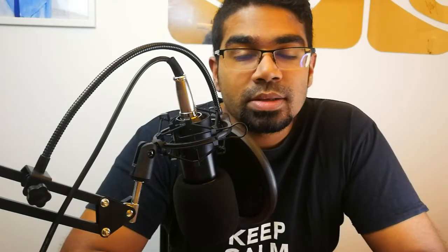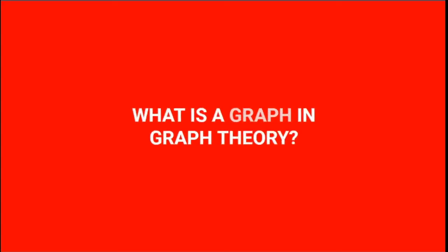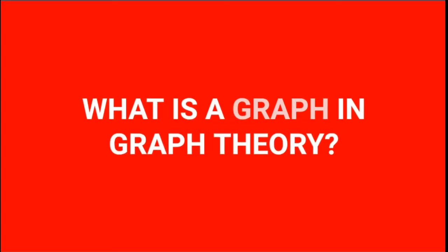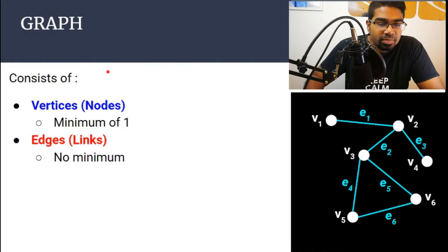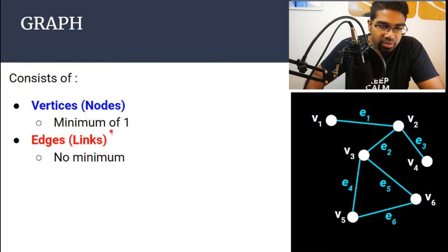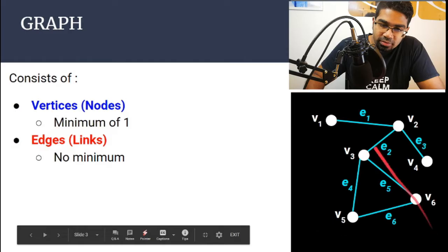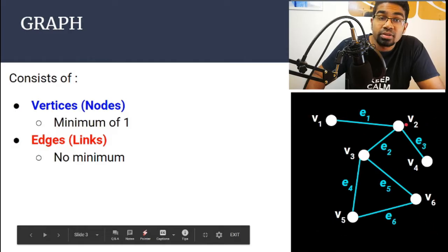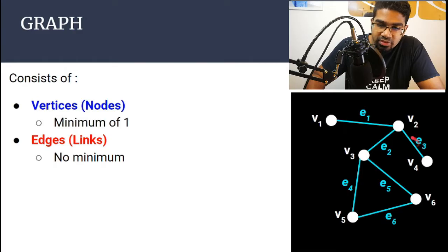The first thing we need to know is that a graph is basically made of vertices, also known as nodes, and edges, also known as links. Let's look at the graph on the right. This here is a graph. V represents the vertices — the singular is known as vertex — and E represents the edges.